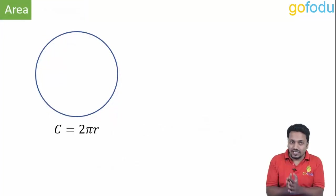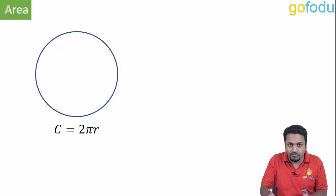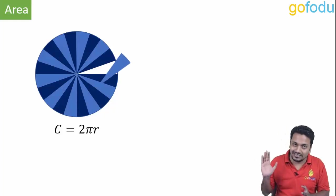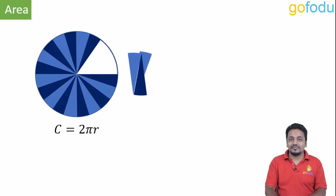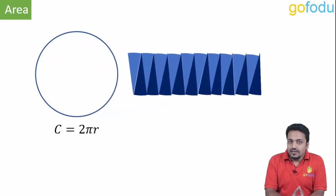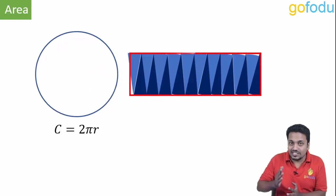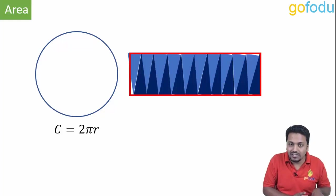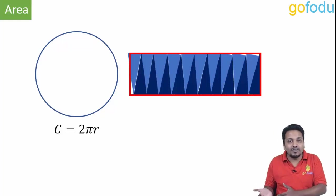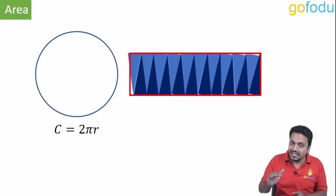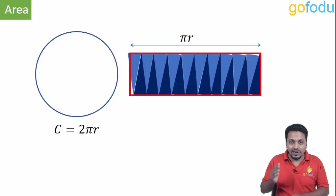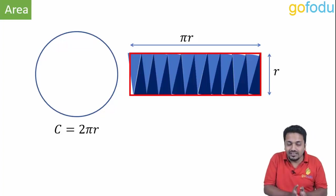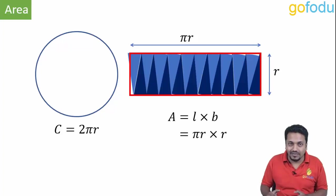Next is the area of a circle. We know it is Pi r squared, but where did it come from? Divide the circle into small sectors and arrange these sectors one by one — we get a rectangle with the same area as the circle. The length of this rectangle was the circumference, so half of 2 Pi r is Pi r, and the breadth equals the radius. So area of circle equals length times breadth: Pi r times r equals Pi r squared.